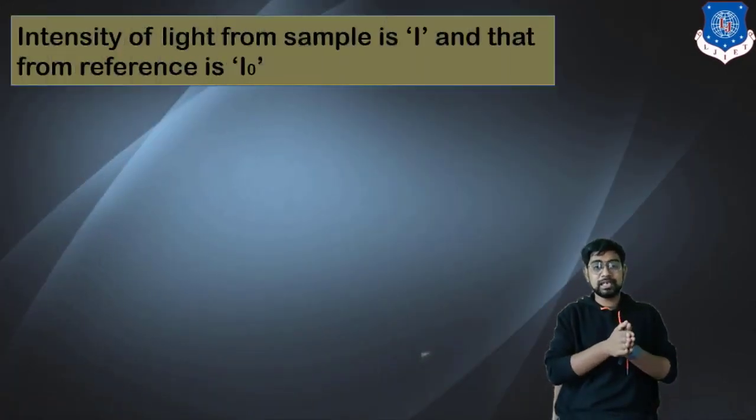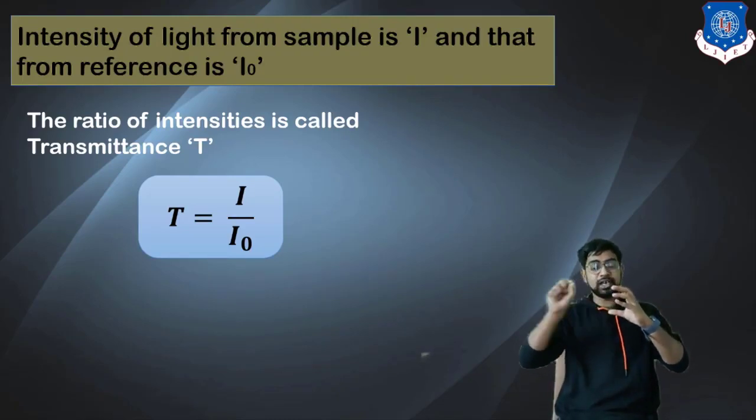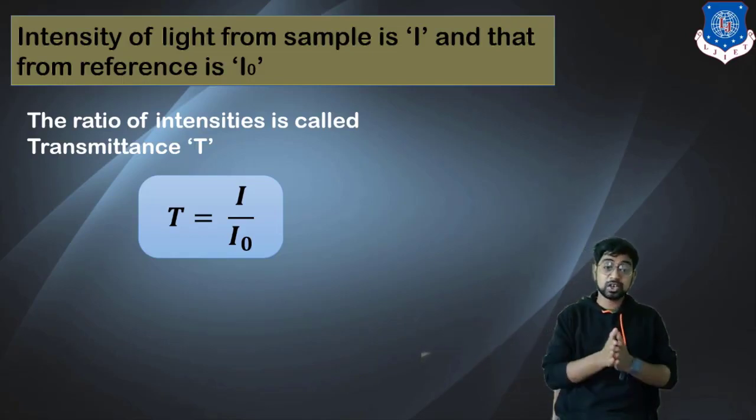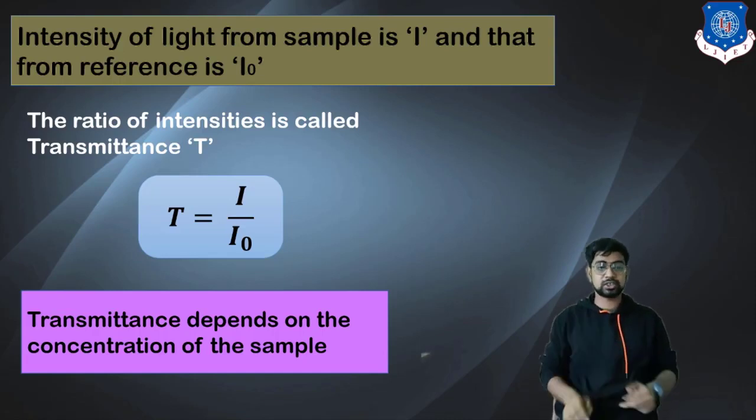How is this functioning? The intensity of light from the sample I and that from the reference I0 would be different. When the light is passing through the reference, a definite amount of light is going through it and the photodiode is detecting. According to the sample's concentration, the light would be absorbed or allowed to flow through it. The more it's allowed to flow through, the more the photodiode would be absorbing. The ratio of intensity is called transmittance: T = I/I0. The transmittance will be dependent on the concentration of the sample.